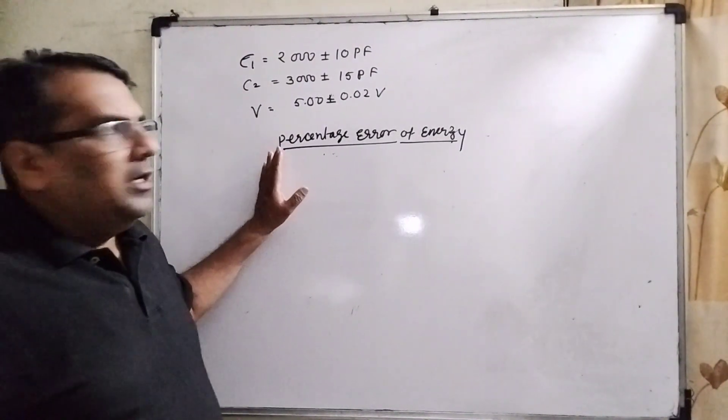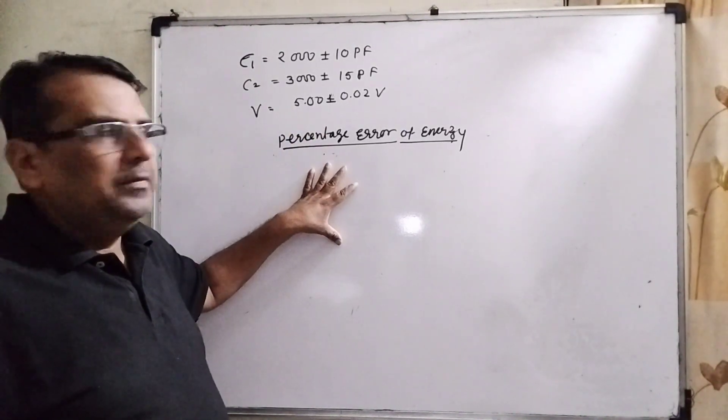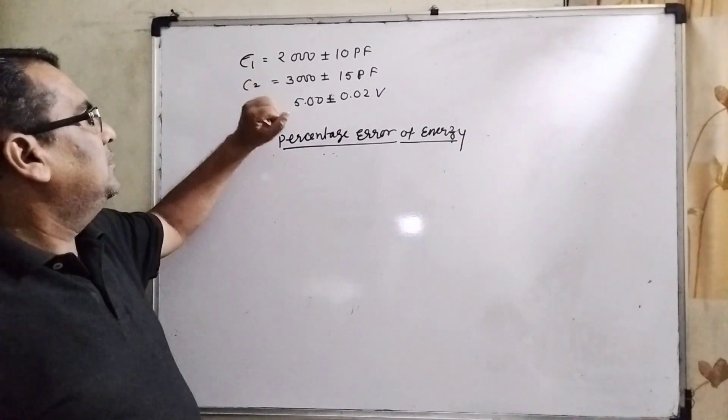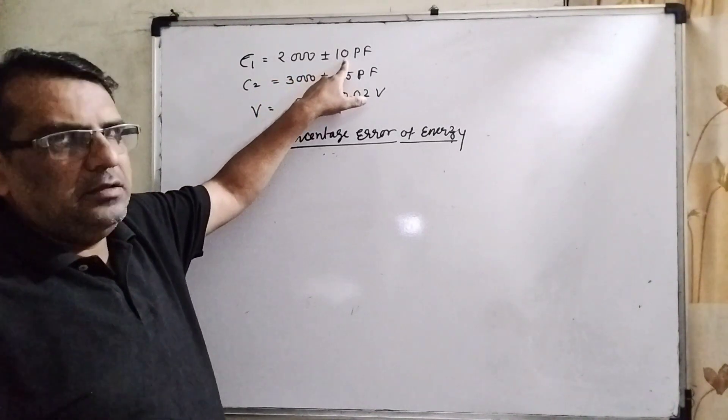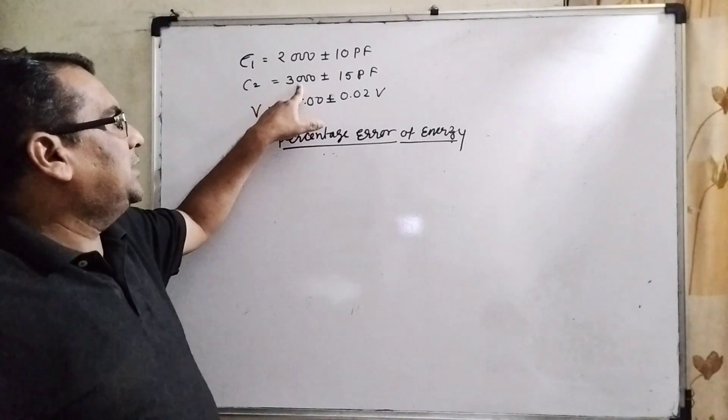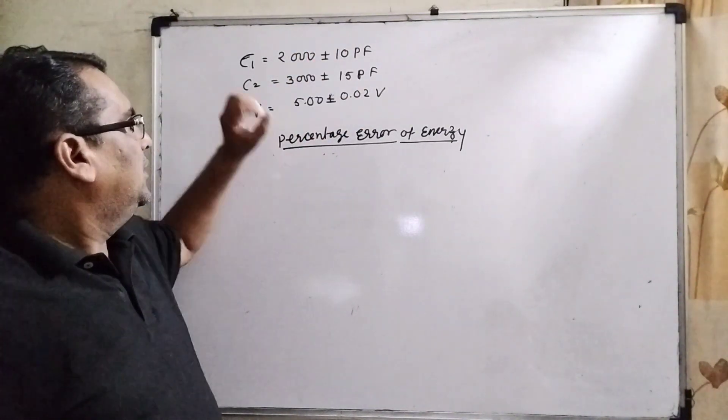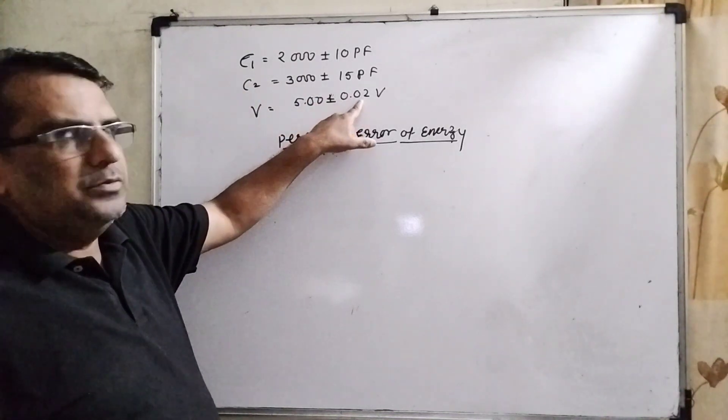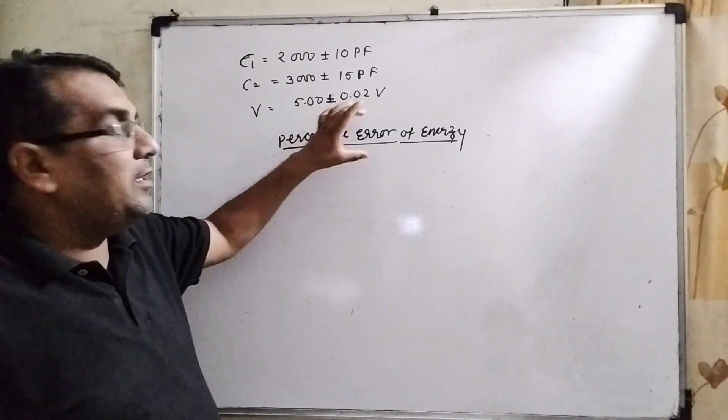This question is based on two concepts: differentiation and error. You are given C1 and C2, the real values 2000 and 3000, with errors plus minus 10 and plus minus 15 picofarads. The potential is given as 5 plus minus 0.02, where 0.02 is the error. We have to find the percentage error of energy.